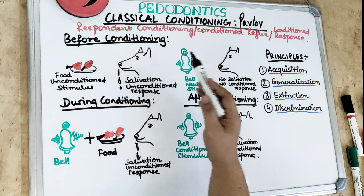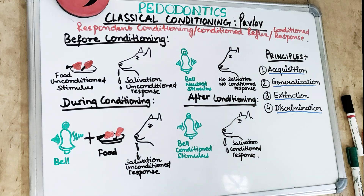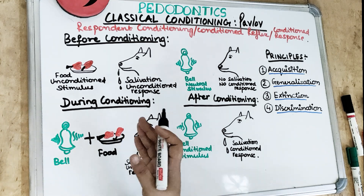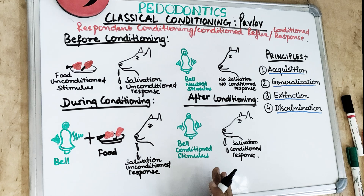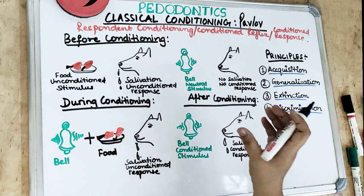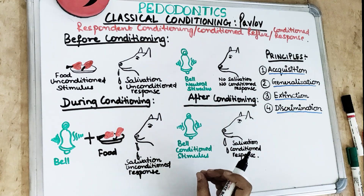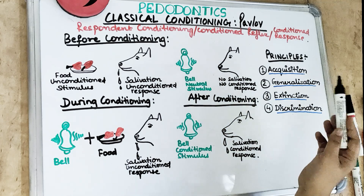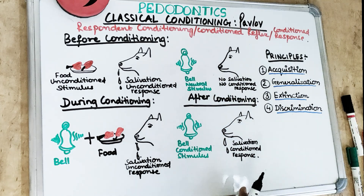The classical conditioning theory was given by Ivan Petrovich Pavlov, a Russian psychologist. He used to study the digestive system of animals and accidentally studied the conditioning reflex on the dog. Conditioning means the process of training a person or an animal to behave in a certain manner. This theory is also known as respondent conditioning, the conditioned reflex, the conditioned response, and Pavlovian conditioning.